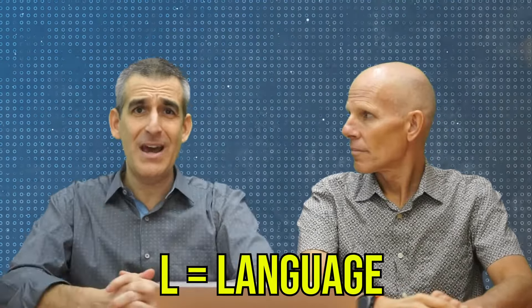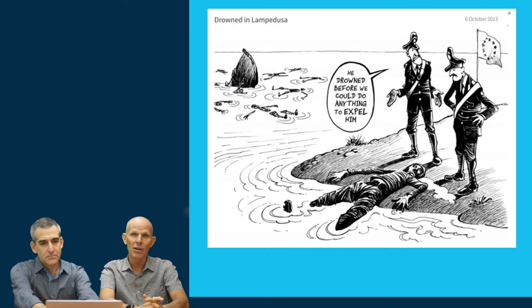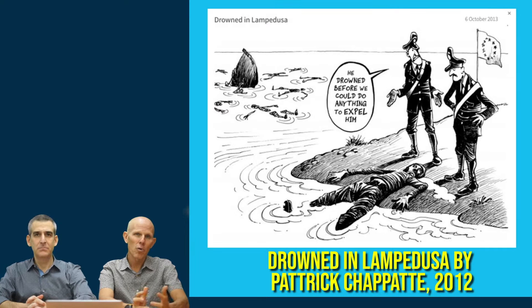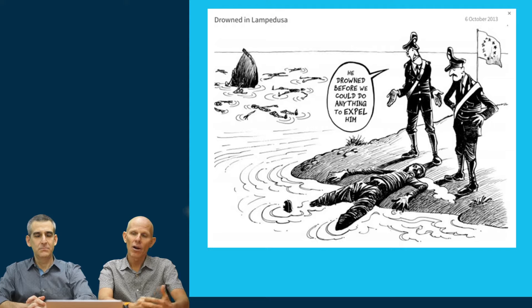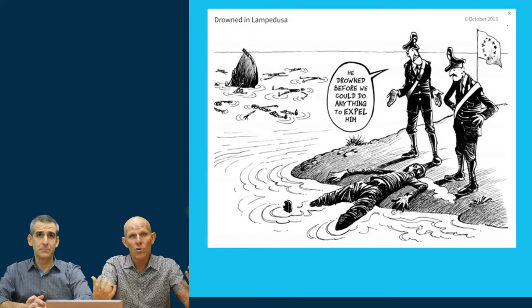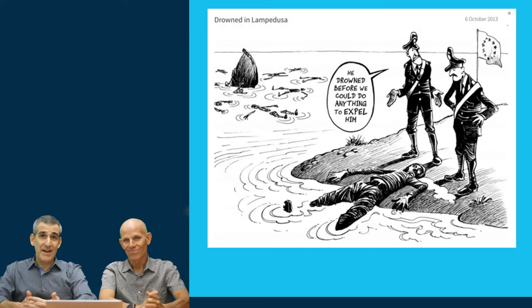So today I think it's time to apply this mnemonic to a cartoon. We've picked a 2012 cartoon by a cartoonist we really love called Patrick Chapot — we'll talk more about him in the next video. This particular cartoon is titled 'Drowned in Lampedusa.' 2012 is an important context because during this time there was a large influx of refugees and migrants leaving their countries, specifically Syria and countries with civil war and unrest, coming to Europe. There was a huge refugee crisis that people were — or were not — adequately addressing.